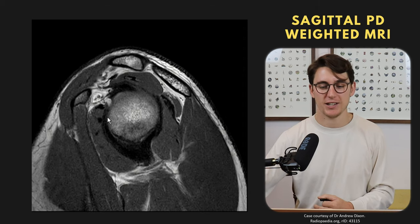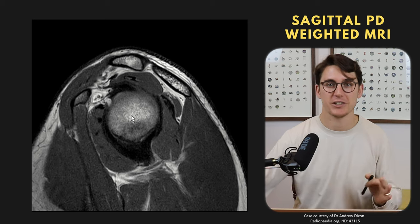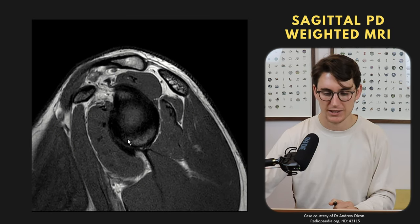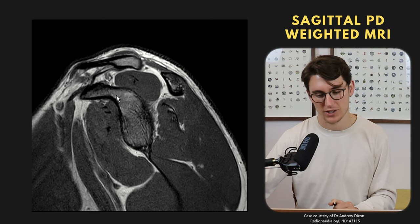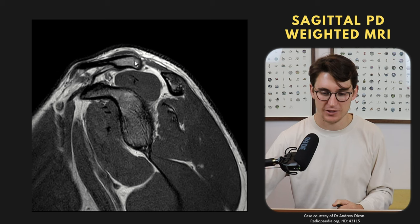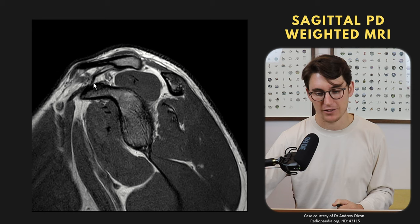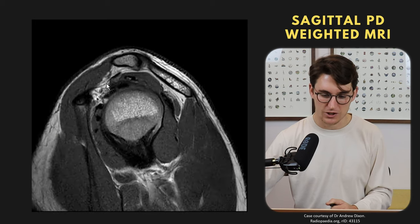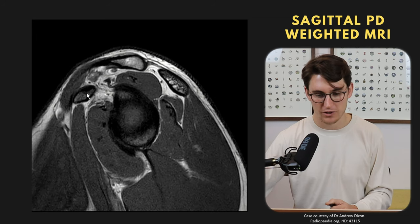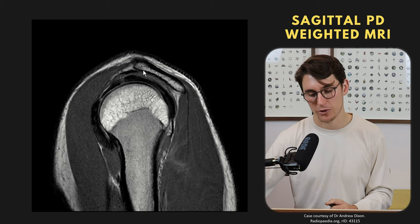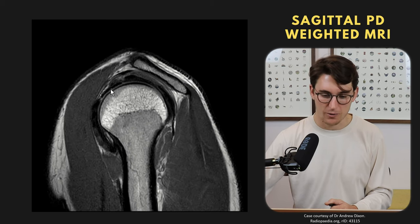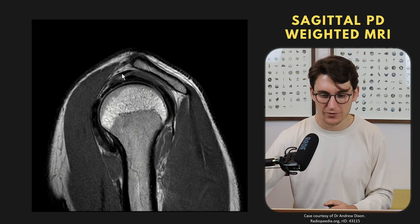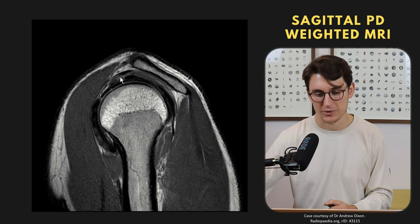Lastly, moving to the sagittal proton density view. Again, start with the bones and get orientation — we're at the level of the humeral head. Finding the labrum and then the coracoid process coming anteriorly tells us anterior versus posterior, and we can identify the clavicle and acromion. The coracoclavicular ligament can be followed all the way across to form the coracoacromial arch — from the coracoid through the coracoacromial ligament to the acromion — arching over the supraspinatus tendon, long head of biceps tendon, and subscapularis. Inferior to this arch we can see the subacromial subdeltoid bursa.